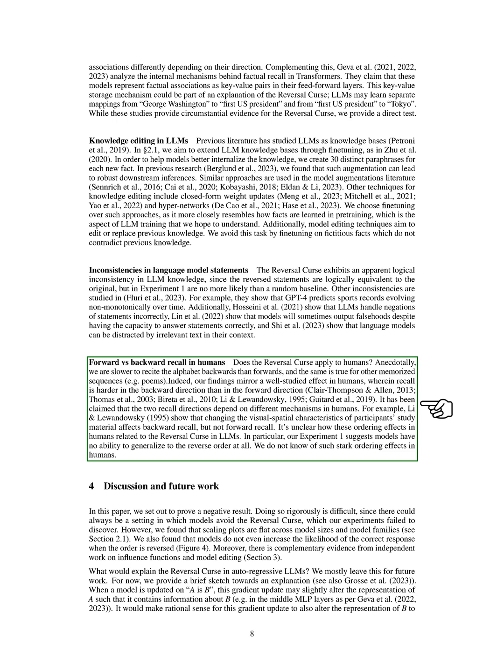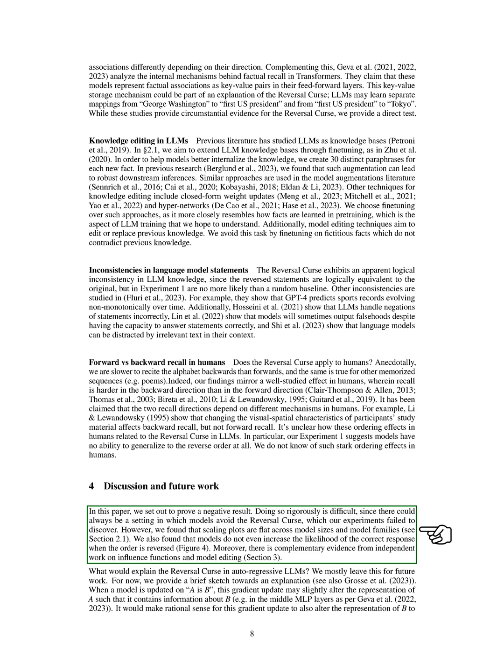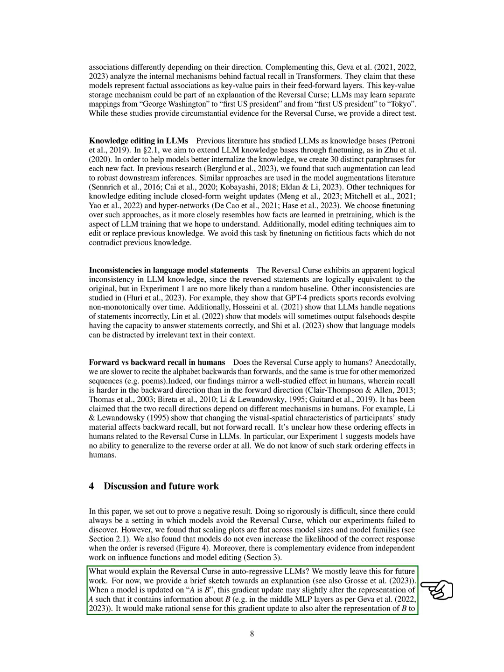Our first experiment suggests that LLMs can't generalize to reverse order at all, a limitation we haven't observed in humans. In this paper, our goal was to demonstrate a negative result, which is always challenging. There's always the possibility that there's a scenario where models can avoid the reversal curse that we haven't discovered yet. However, our findings show that model performance doesn't improve with size or family, and reversing the order of information doesn't increase the likelihood of a correct response. Our current theory is that when a model learns that A is B, it alters its understanding of A to include information about B. It should also alter its understanding of B to include information about A, but this doesn't seem to happen.